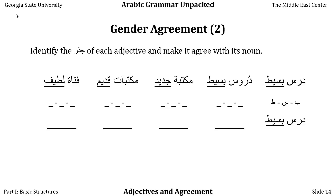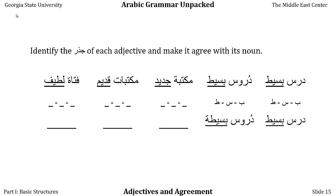Remember our main rule of basic Arabic: non-human plural is feminine singular. So when we take dars, a masculine noun, and turn it into durus, its plural, it becomes feminine but stays singular. This is weird to English speakers and takes a lot of getting used to. The jidhr stays the same — ba-sin-ta — but now durus, even without ta' marbuta, is feminine singular because it's a non-human plural. So we add ta' marbuta: durus basita, simple lessons.